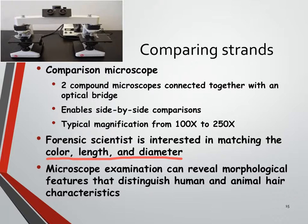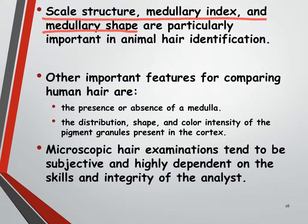What forensic scientists are most interested in matching would be the color, length, and diameter of the hair in question. By looking at hairs under the microscope, we can look for certain features that tell us whether we're looking at a human hair or an animal hair. We also pay attention to the scale structure or pattern, the medullary index — which means how much space the medulla takes up in the hair — and the shape of the medulla: is it continuous, fragmented, or discontinuous? All of these things help in identifying hair as either animal or human.